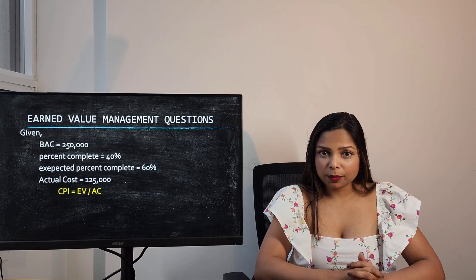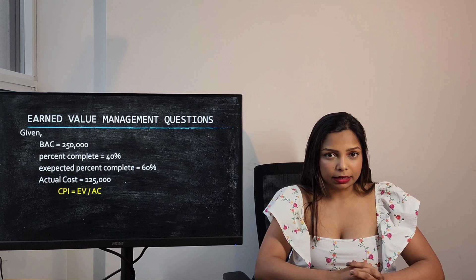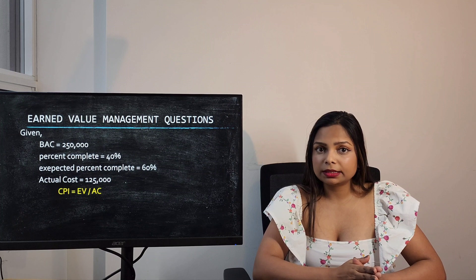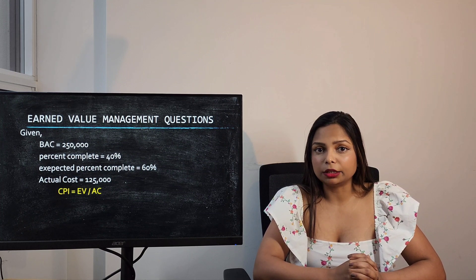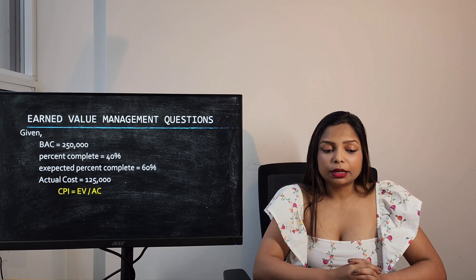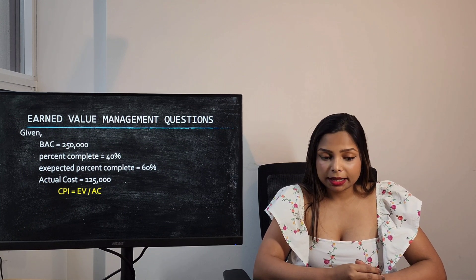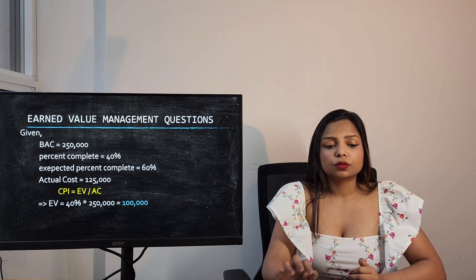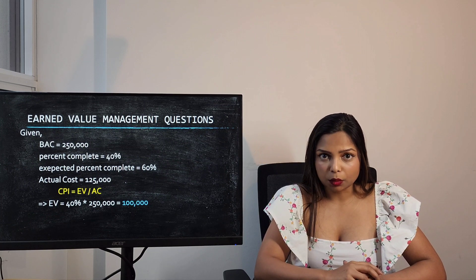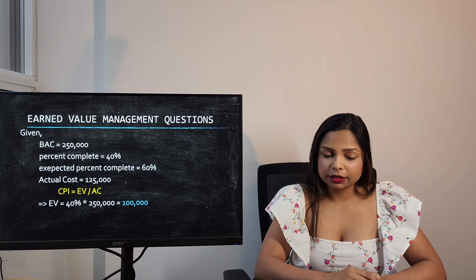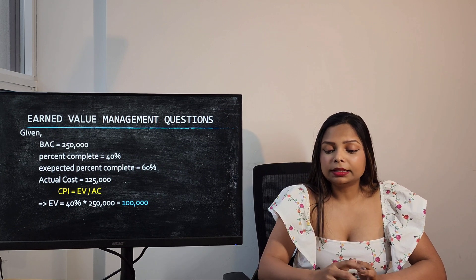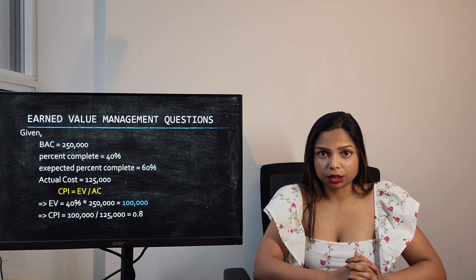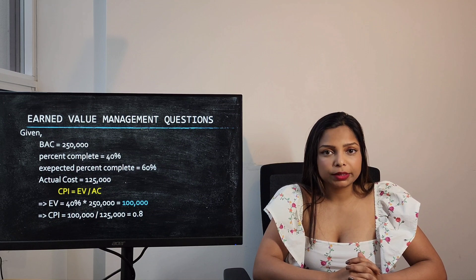To calculate the Cost Performance Index, the formula is Earned Value divided by Actual Cost. First, calculate Earned Value: 40% multiplied by $250,000 equals $100,000. Then divide $100,000 by $125,000, which gives a CPI of 0.8.